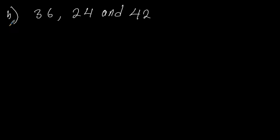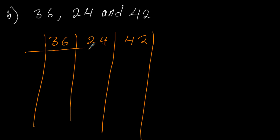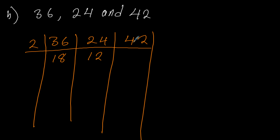Part B — we have 3 numbers: 36, 24, and 42. As we've done in the previous example, we use a number which can divide all of them. So in this case all of them are even numbers, so 2 will work perfectly. 36 divided by 2 we get 18, 24 divided by 2 we get 12, and 42 divided by 2 we get 21.